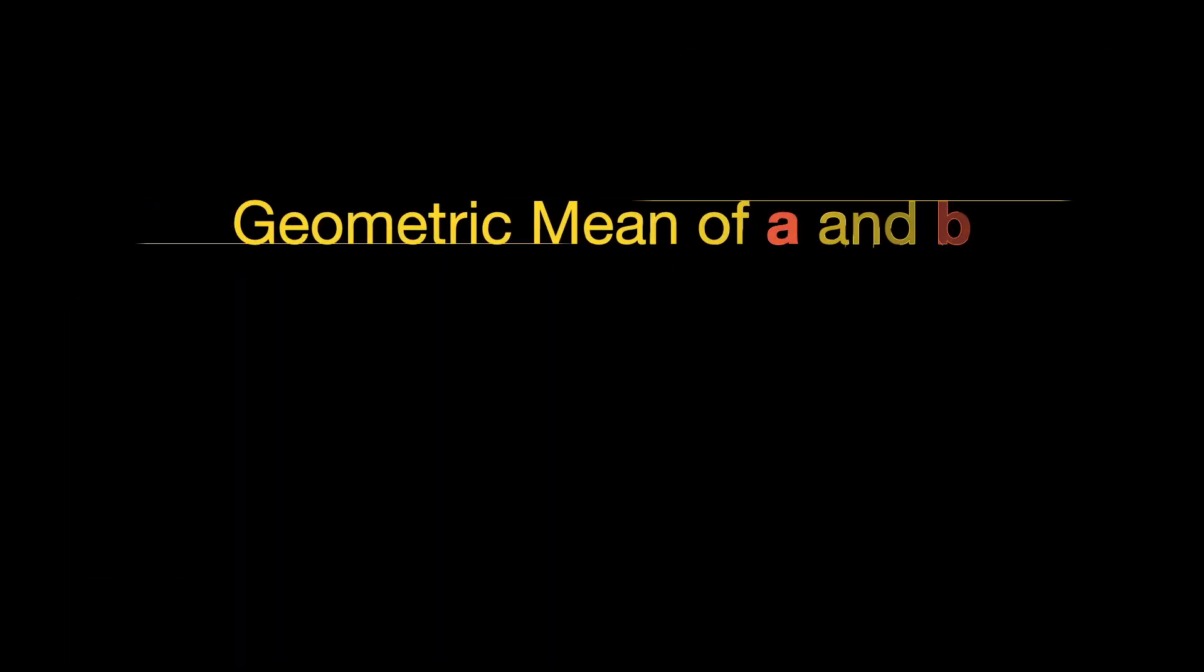So what is geometric mean of two numbers A and B? Suppose A and B are positive numbers. Then their geometric mean is defined as square root of A times B. We will learn how to construct the geometric mean of A and B geometrically.